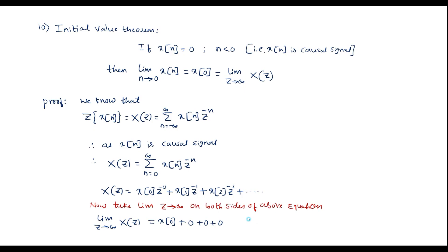Therefore, we can write: the limit as n tends to 0 of x of n is equal to x of 0, which is equal to the limit as z tends to infinity of x of z. Thus this property is proved. Now consider the 11th property of Z-transform, that is the Final Value Theorem.